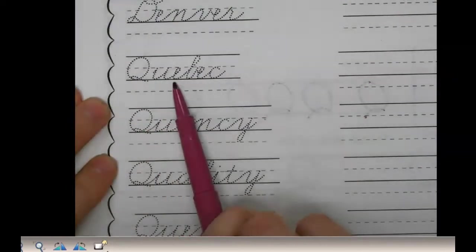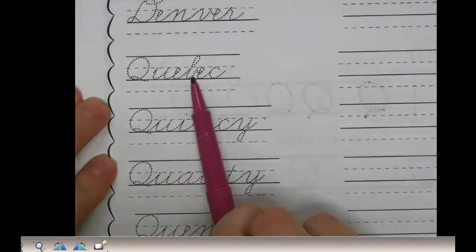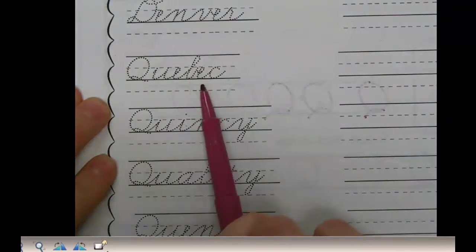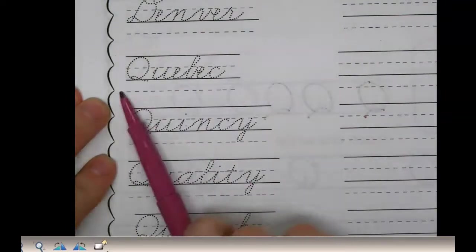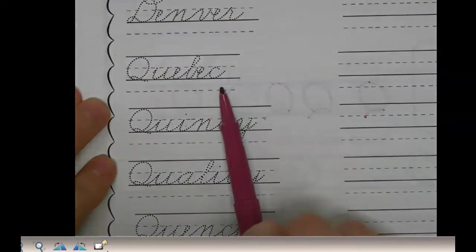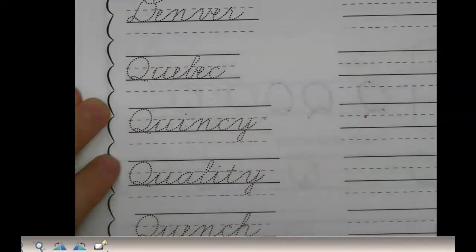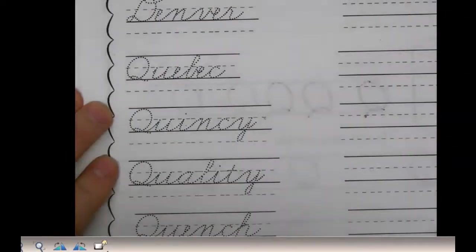Q-U-E-B-E-C. What word is it? Quebec. Quebec is a province or territory in Canada, and Miss Mirwald is from Canada. I don't remember where in Canada, but you guys could ask her about Canada.